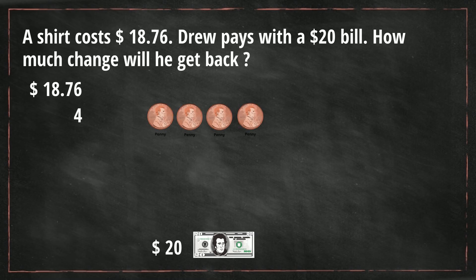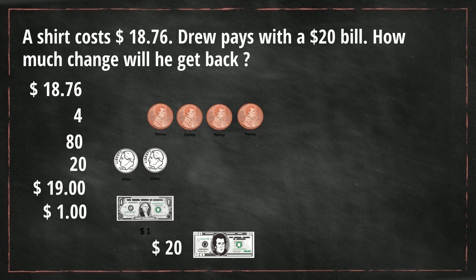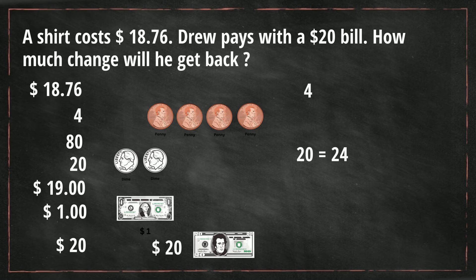We're at $18.80, and if we give Drew back two dimes, that gives us $18.80, $18.90, and we're at $19. Now, at $19, we can just give Drew back one more dollar — $19 plus $1 is $20. So let's total up what we gave Drew: we gave him four cents plus two dimes, that's 24 cents, plus $1, so he gets $1.24 back.